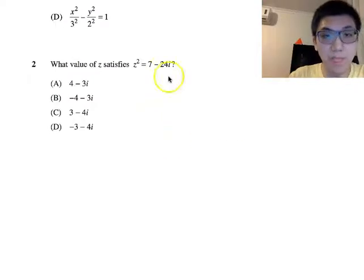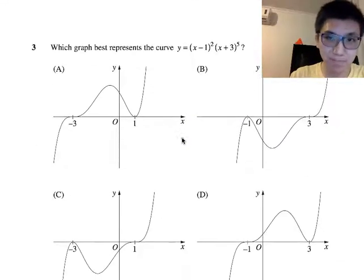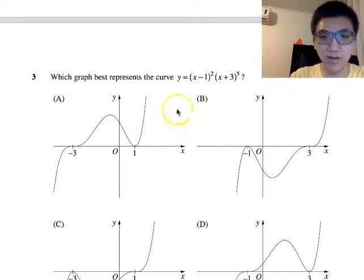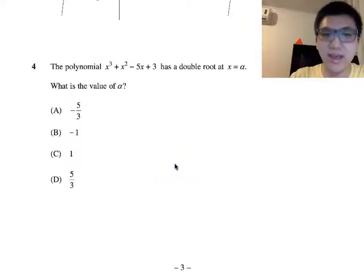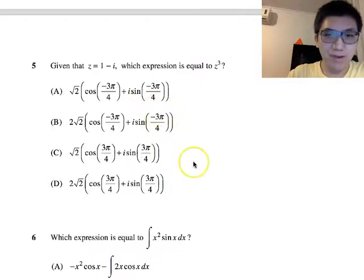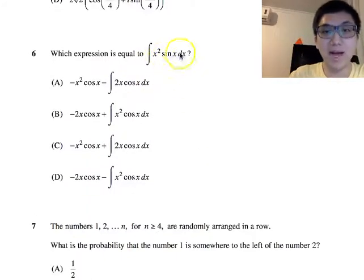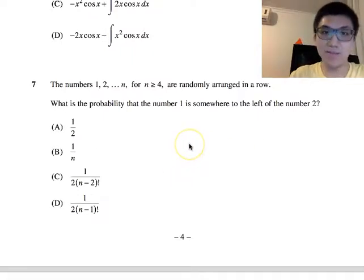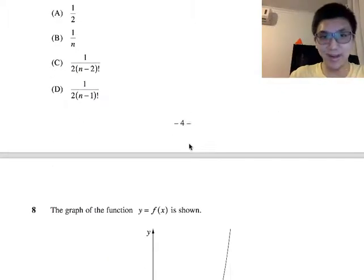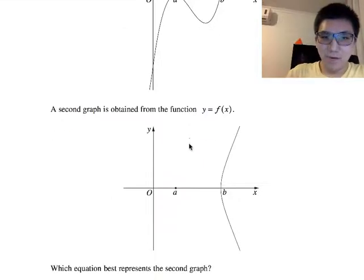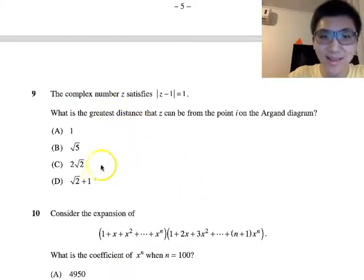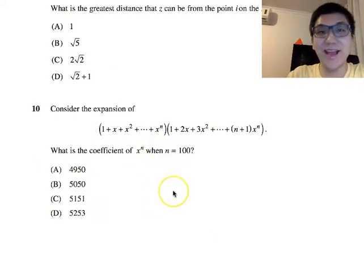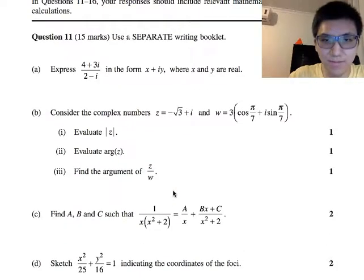Looking through the multiple choice: eccentricity — probably a no-brainer. A polynomials question related to roots — double root at 1, I'll work on that later. De Moivre's formula — nice and easy. Integration by parts with a product of functions — no worries. Probability — this might kill me a bit, so I'll come back to it. A translation of y equals f(x) — I can probably do this on the spot. One I don't know how to do, and one I know but needs a lot of thought. Multiple choice done.